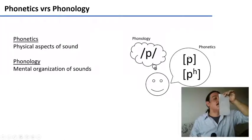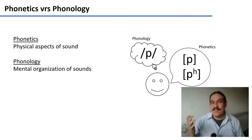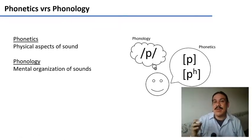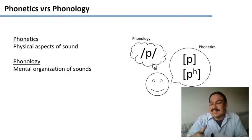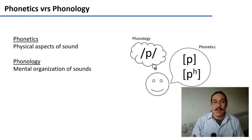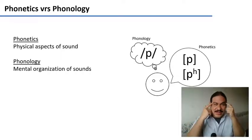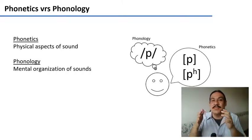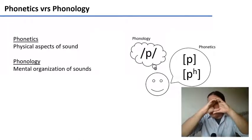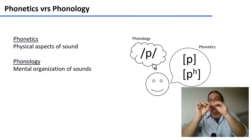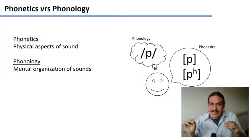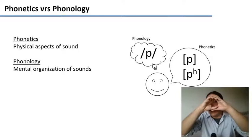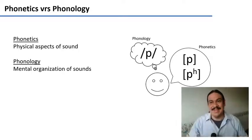The unaspirated P occurs in the word SPOT, and the aspirated P is the first sound of the word POT. So physically they are two very different physical realities with different motions of your mouth. However, mentally we think that both of those are just different kinds of P. There is one mental representation called P, and both the unaspirated and the aspirated versions are just two different personalities of this same mental reality that we call P in English.